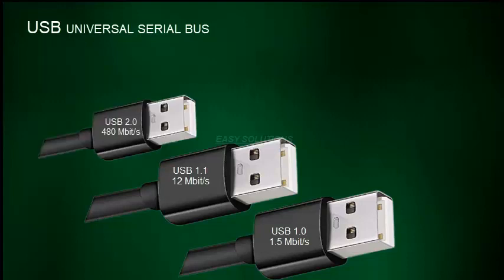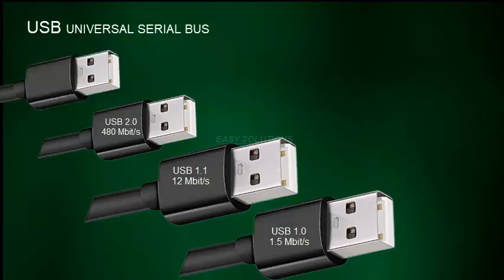Then in the year 2000, USB 2.0, which is also known as high-speed USB, was released, and this had a significant speed upgrade from USB 1.1, with speeds of 480 megabits per second. Then in 2008, USB 3.0 was released, known as super speed USB, boasting 5 gigabits per second. The high-speed increase was meant for transferring large amounts of data, such as backing up to external hard drives.